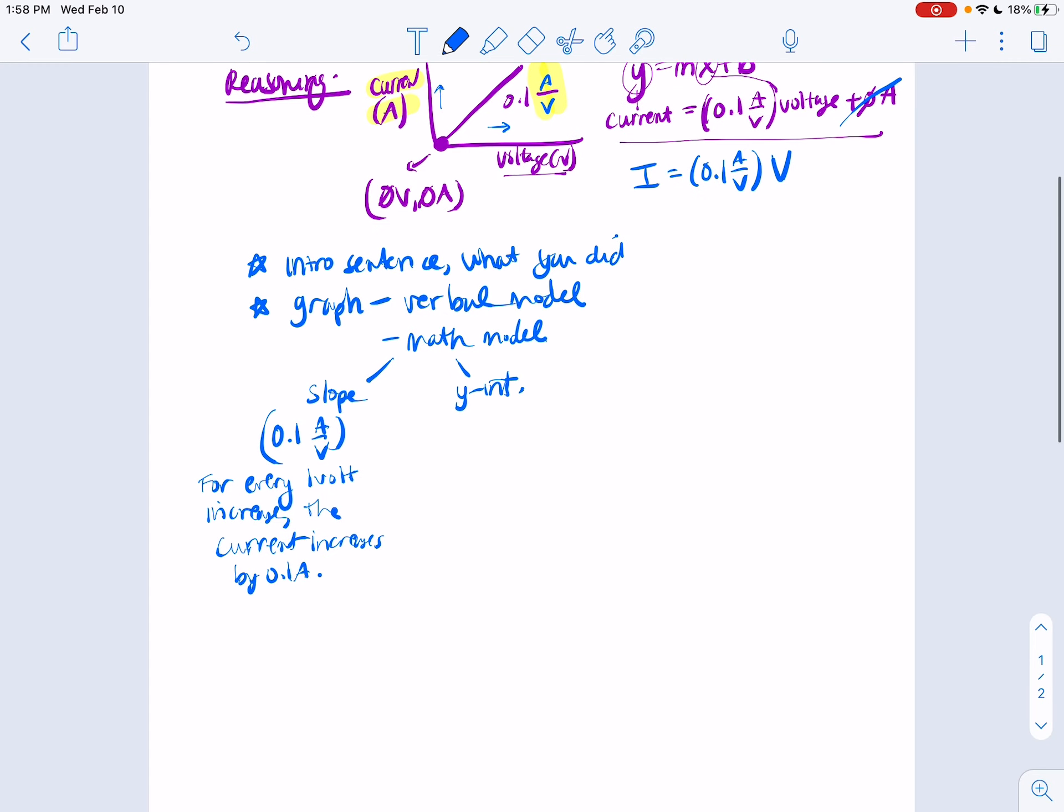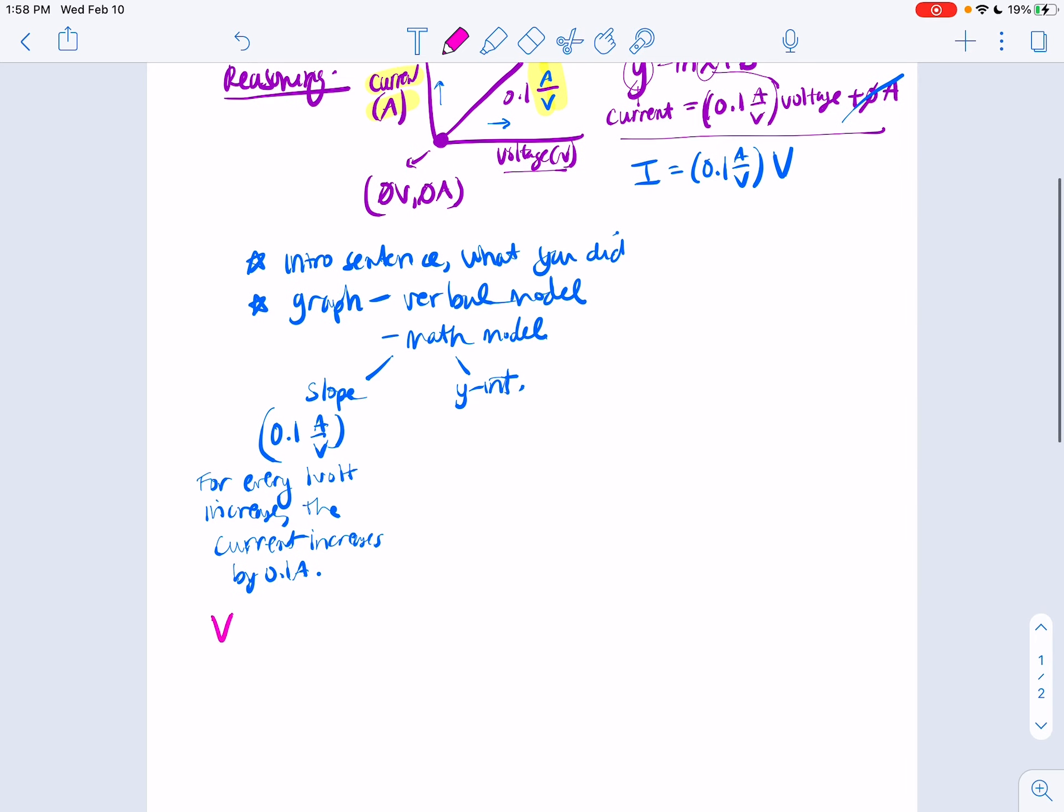And then also you want to say what that means. So when the voltage increases, the current also increases. Voltage is basically the battery's push, and current is the charge flow. So I want you to say something like when the battery pushes harder, then more charges can flow. When the voltage increases, the current increases. The harder the battery pushes, which is the voltage, means more charges can flow, a higher current. That's important to add.